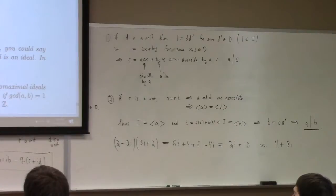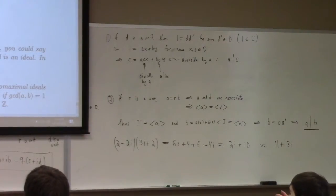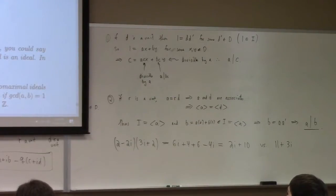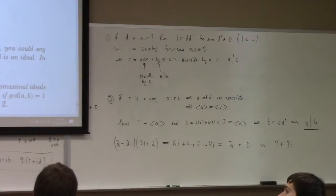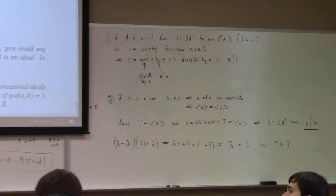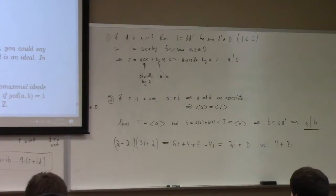If you have two ideals that when added together give the whole ring, they're said to be comaximal — analogous to relatively prime integers. If two integers are relatively prime, the ideals they generate sum to all of Z: for example, the ideals generated by 3 and 5 sum to Z by Bézout's theorem, since you can get 1 as a Z-linear combination of 3 and 5. This story carries over to the more abstract setting.